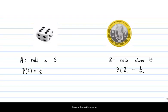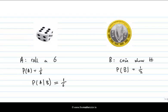Given that the die is fair and the coin is fair, we're dealing with sample spaces where outcomes are all equally likely, so we can easily work out the probabilities. Now let's talk about conditional probabilities. What's the probability of rolling a 6, given that I flip a head? Well, the coin doesn't have any effect on the die, so the probability of rolling a 6 is still 1/6, regardless of whether I have a head or a tail. It's the same as without the condition.